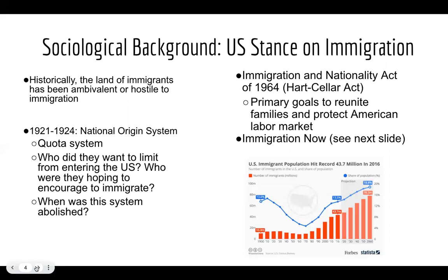The national origin system was replaced by the Immigration and Nationality Act of 1964, also referred to as the Hart-Celler Act. Even though immigration policies have been amended multiple times since then, the key takeaway is that what we no longer have is that quota system.